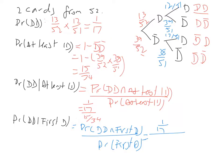So we'd say we've got 13 over 52 times 12 over 51 — that's our two D's — plus 13 out of 52 times 39 out of 51, which is our D and not D. This has answered question 12 from exercise 8.3. That's where you go about doing conditional probability where it's a little bit more involved, and we can use a tree diagram to solve this.